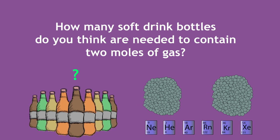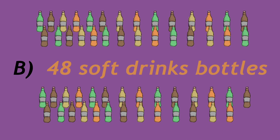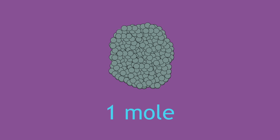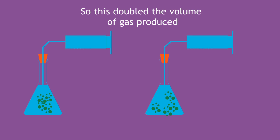Pause and choose from one of the following. The correct answer was B, 48 soft drinks bottles. This is because we doubled the number of moles of gas from 1 to 2 and so this doubled the volume of gas produced.